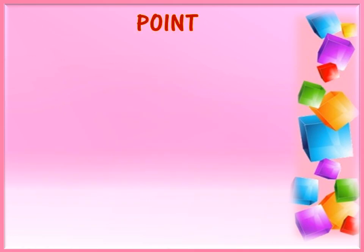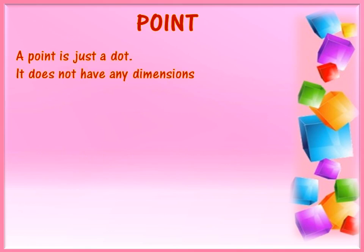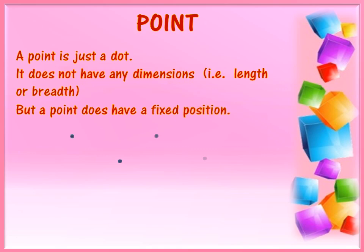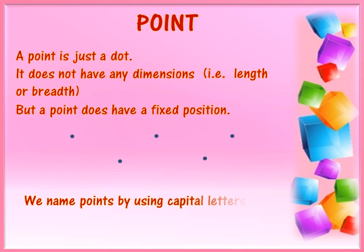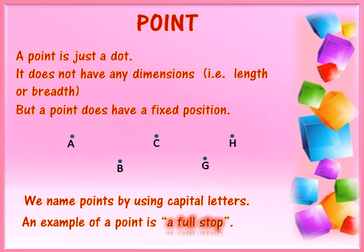Point. A point is just a dot and it does not have any dimensions. That means it does not have length or breadth. But a point does have a fixed position, as in these examples. We name points by using capital letters. For example, point A, point B, point C, point G and point H. An example of a point is a full stop.